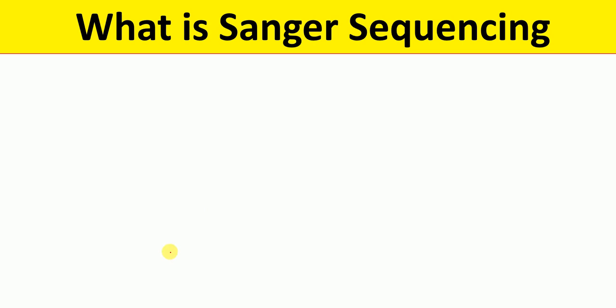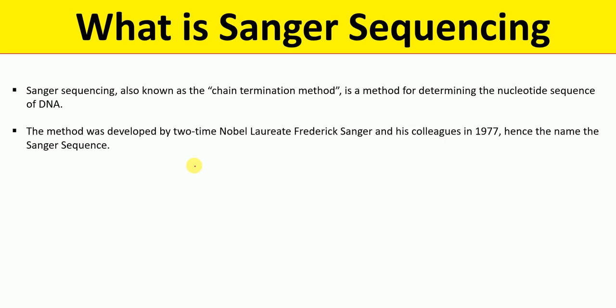Let me first talk about what is Sanger sequencing. Sanger sequencing is also known as the chain termination method. This is a method that is used for determining the nucleotide sequence of a DNA.